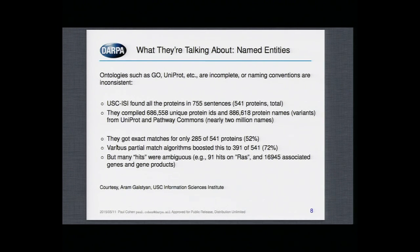Many of the things that appear in papers simply don't appear in the databases. When you do find something in the database, you typically find too many. I looked up RAS yesterday. In Gene Ontology there are 91 entries, and almost 17,000 entries of things associated with RAS. How is a machine supposed to know who are the players in a story? It's not a trivial problem by any means.